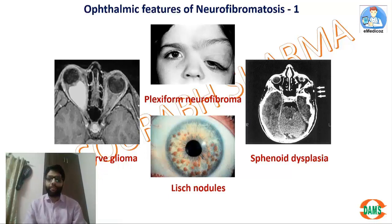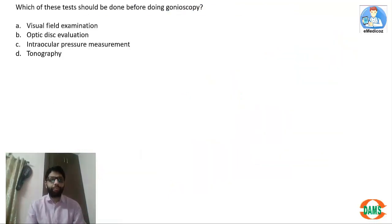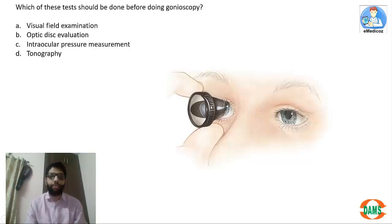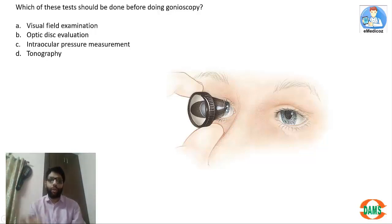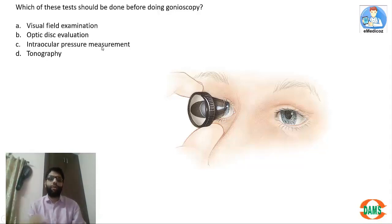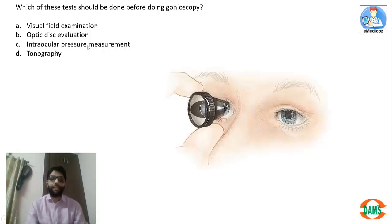The most common ophthalmic manifestation of NF1 is Lisch nodules, and sphenodysplasia is also present. Posterior capsular cataract is the most common ocular manifestation of NF2. Xanthogranuloma has no relation with NF, making it the exception. Regarding the next question — which test should be done before gonioscopy — since gonioscopy involves indenting the cornea and pressing on it, this will artificially lower intraocular pressure. Therefore, IOP measurement must be done before gonioscopy.